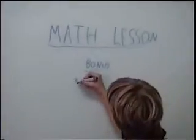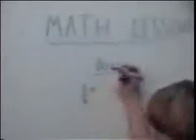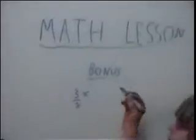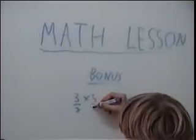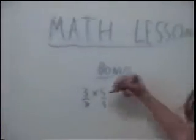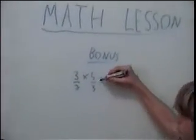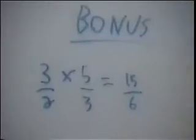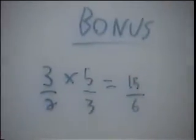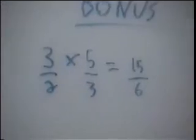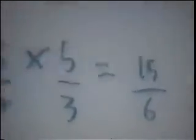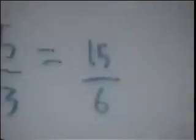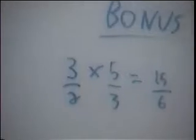Three over two times five over three. Three times five equals fifteen, two times three equals six. As you can see, we have a problem here. The top number is bigger than the bottom number. So, what you do is you have to convert it into a mixed number. A mixed number is a number where there's a whole number and then a fraction beside it.